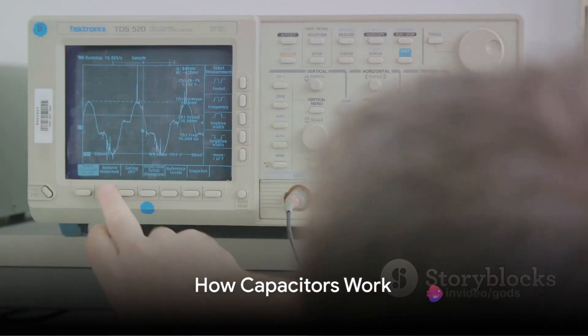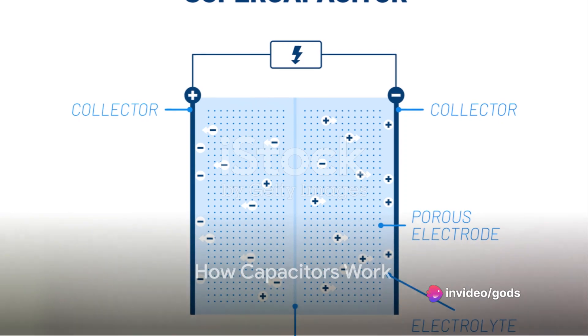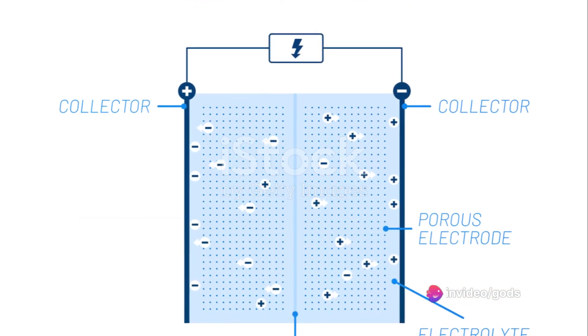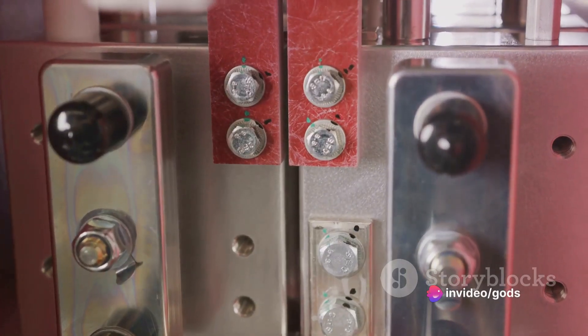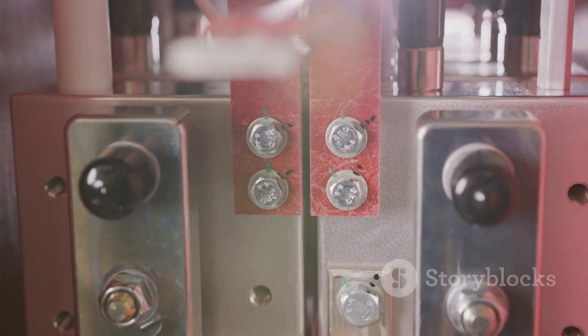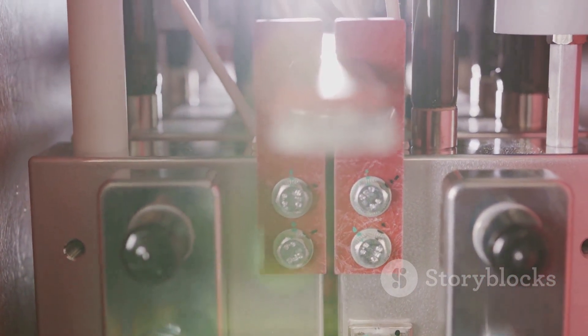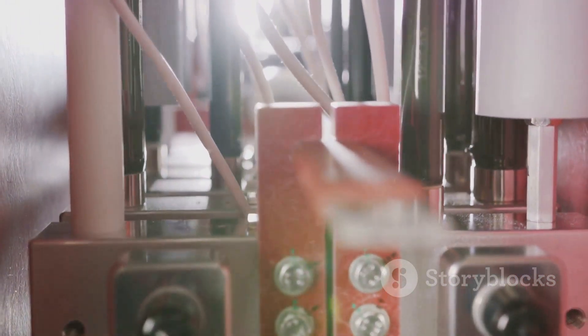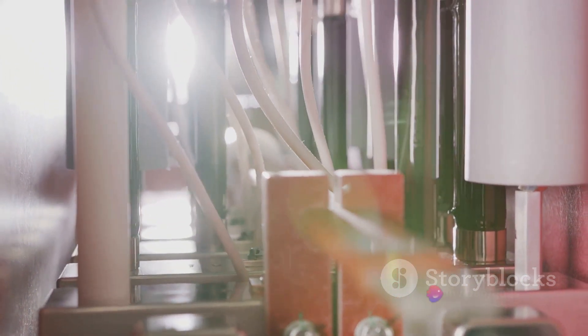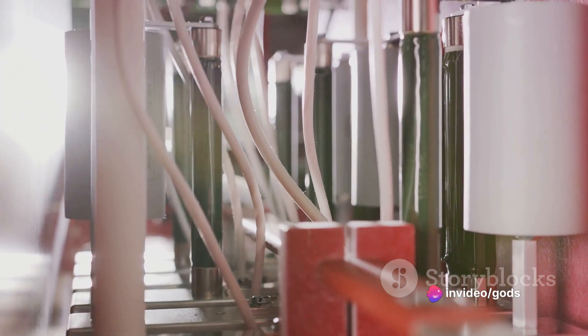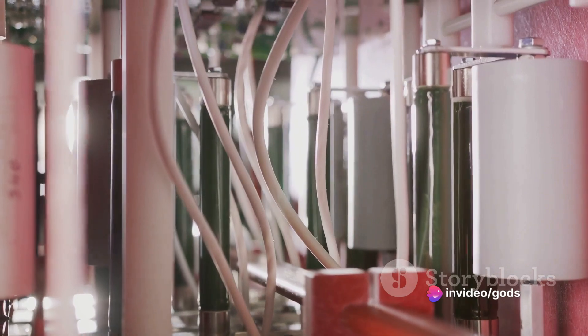But what exactly is a capacitor and how does it work? Well, think of a capacitor as a tiny storage unit for electrical energy. It works on a simple principle. It stores energy in an electric field created between two conductive plates. These plates are separated by a non-conductive material, or an insulator, which prevents the charges from flowing directly from one plate to the other.